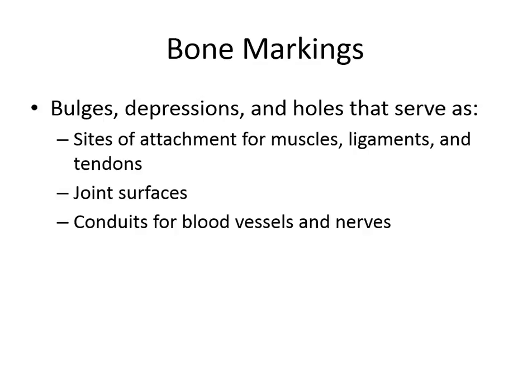On those four differently shaped bones, you'll see different bone markings — different points, different grooves, holes, and depressions. These are important because they're going to be points where you have muscles attaching, ligaments, and tendons. You can have interesting shapes where you have articulations or joints, and you can have holes which might have blood vessels running through them.